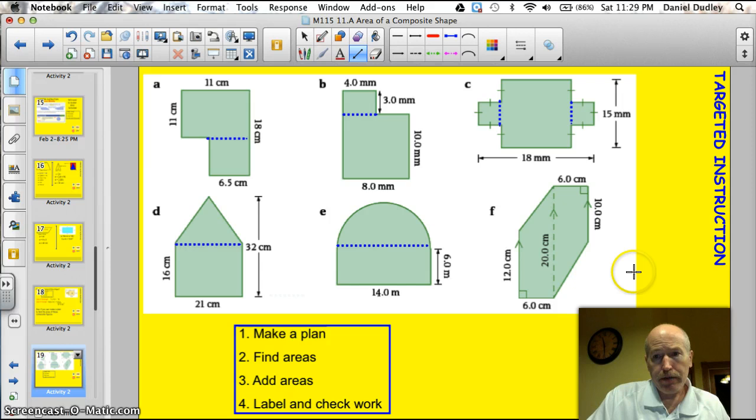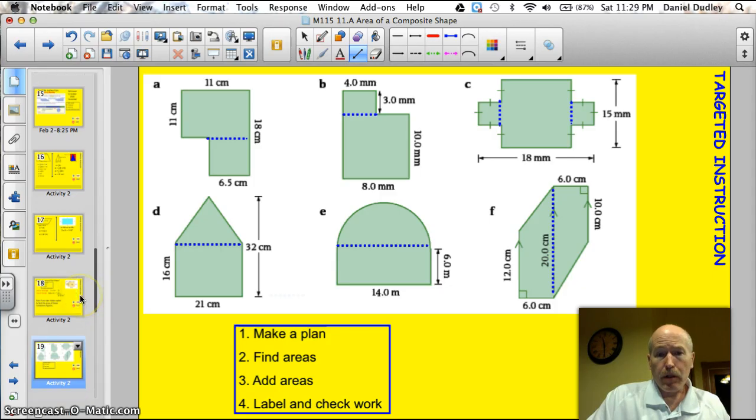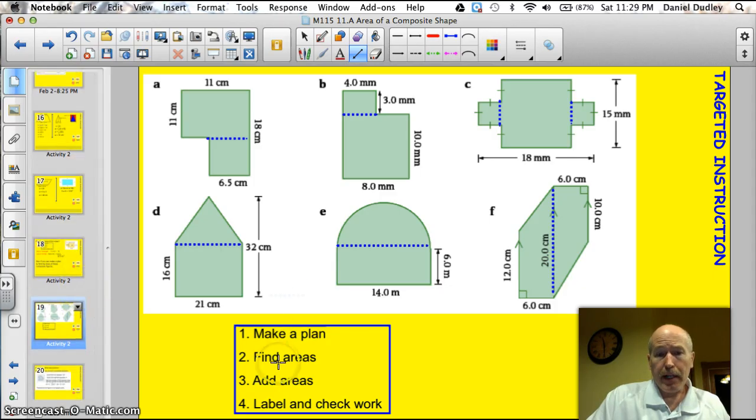This one's a little tricky, too. What would you do? I think I'd split it right down the middle here. I'd find the area of this trapezoid and the area of this trapezoid. And I know those formulas are a little bit tricky, but most of the time on testing situations, they will give you the formula, a list of formulas. And you just have to recognize that it's one-half the height times base one plus base two. All right. Very good. Make a plan. Find the areas. Add them together. Label your work.